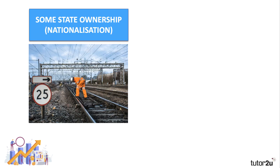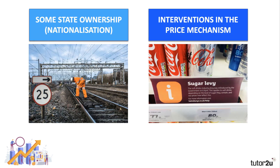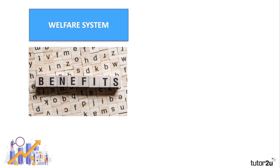In a mixed economy we have some state ownership. For example, in the UK, Network Rail is a not-for-dividend company that makes profits, but the profits are reinvested in the rail infrastructure. The state also intervenes in the price mechanism — for example, the sugar levy came into force in the UK in 2018, designed as a hard nudge to change behaviour and hopefully reduce demand for and consumption of high-sugar content drinks.